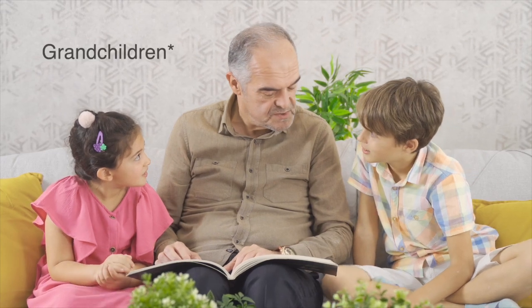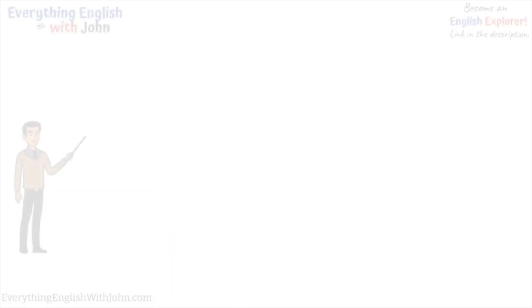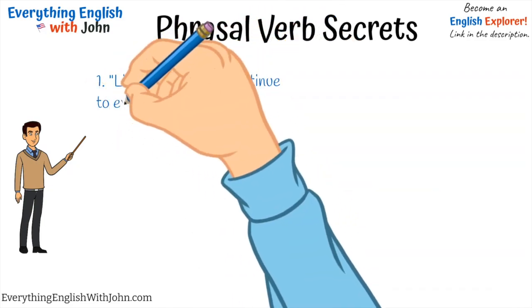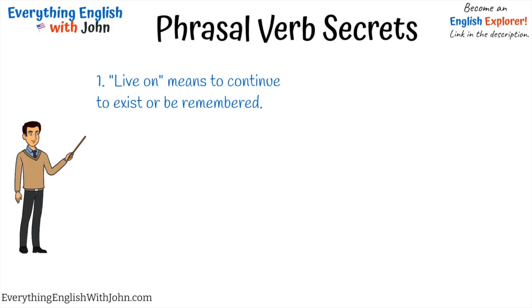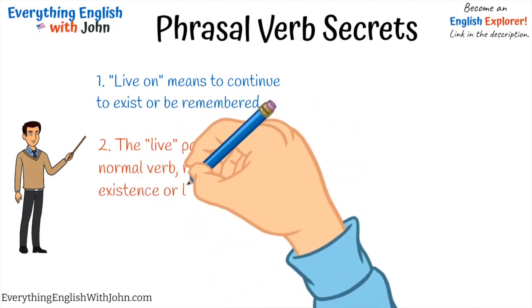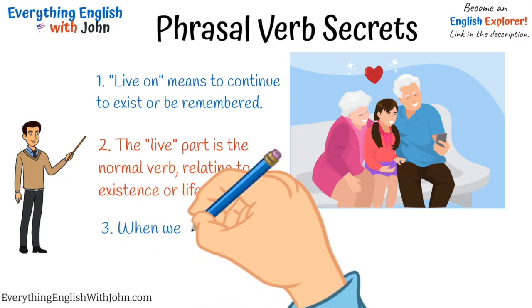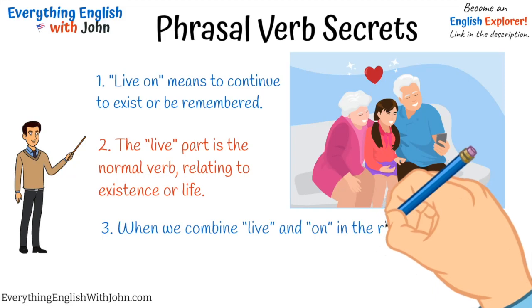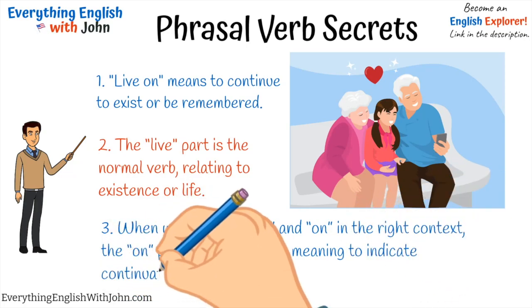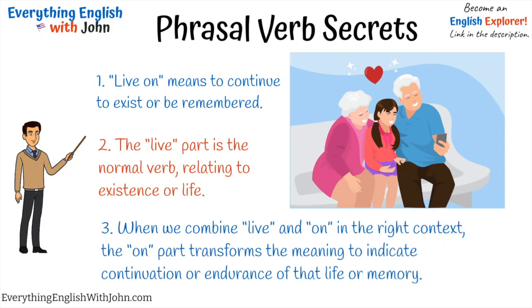For example, this man is a grandpa. He's telling stories to his children. Those stories will live on for a long time — they will continue to exist. Phrasal verb secrets: 'live on' means to continue to exist or be remembered. The 'live' part is the normal verb relating to existence or life. When we combine 'live' and 'on' in the right context, the 'on' part transforms the meaning to indicate continuation or endurance of that life or memory.